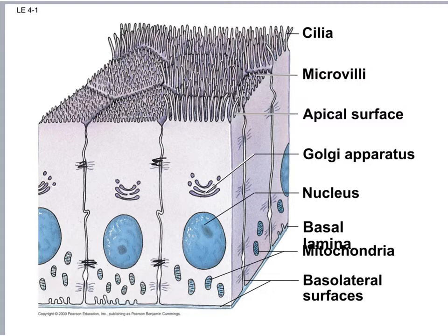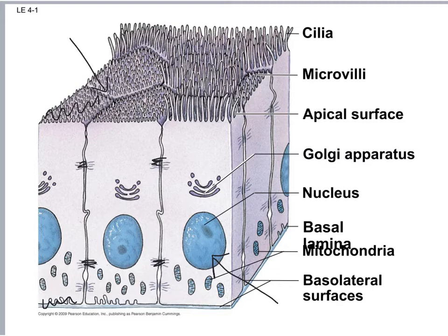The next characteristic is polarity — what happens on one end of the cell is different from the other end. Microvilli and cilia are on one end but not the other. They're on the apical surface, exposed to the lumen or inside of the passageway, because that's where nutrients get absorbed into cells lining the digestive tract.